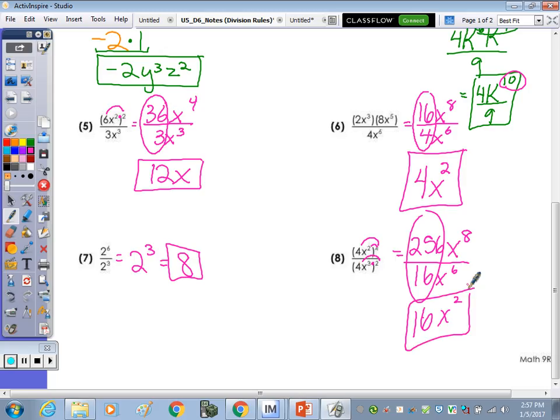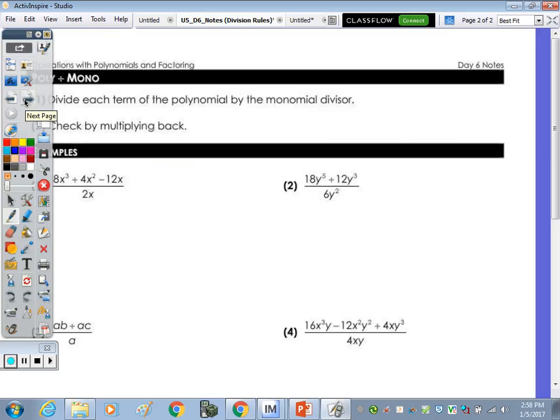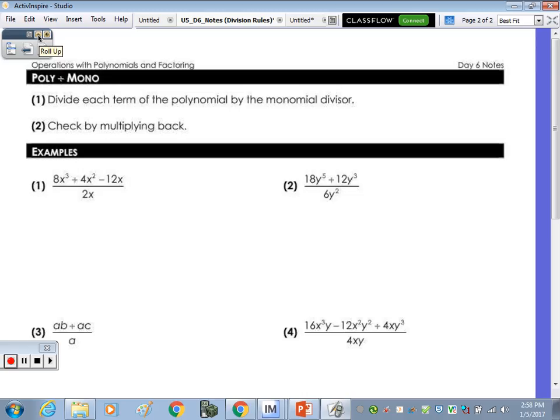Now this morning, they thought the back was much easier than the front, and I would have to agree with them. When you're dividing any polynomial by one term, you just simply divide every term in the numerator by what's in the denominator. And they tend to be easier expressions.